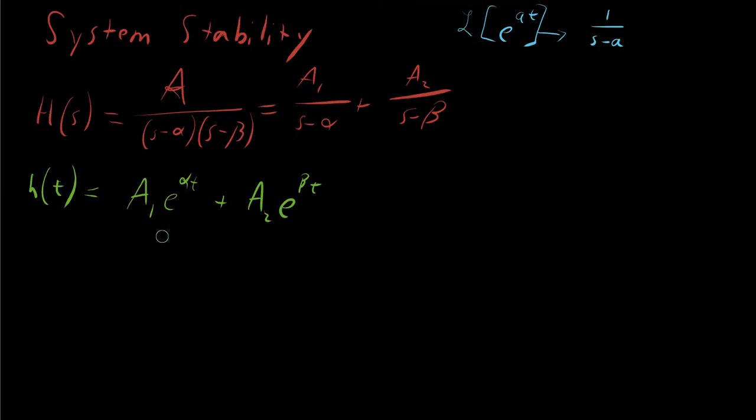When we say a system is stable, that means that for a given impulse function, or for any given input, it doesn't explode. It doesn't go to negative infinity or infinity. Well, where are the time-varying terms here? They're up here, and what do we have?